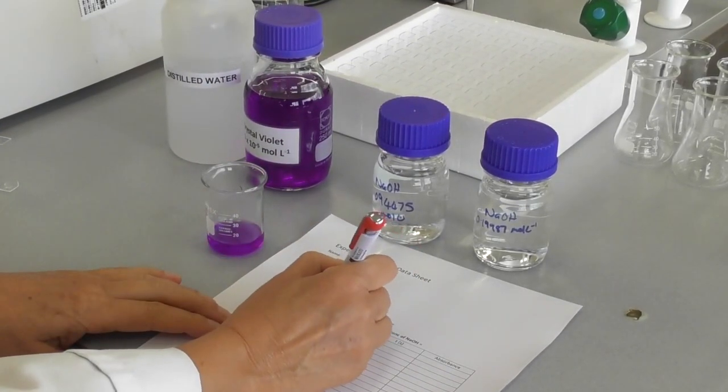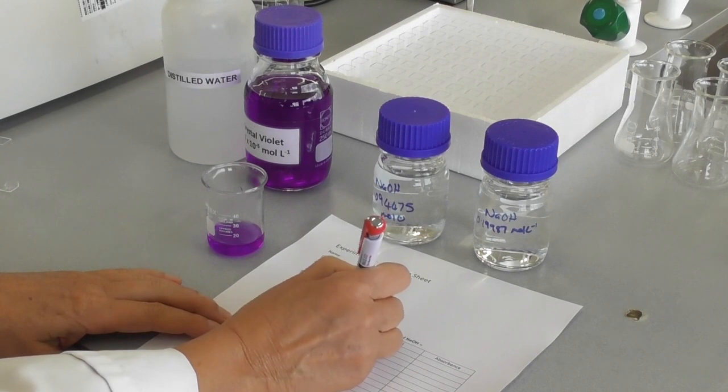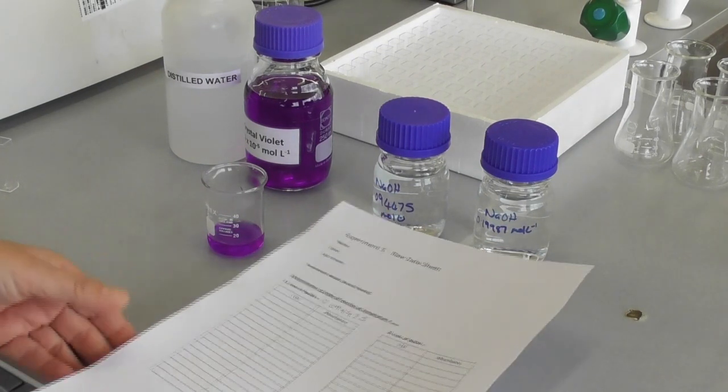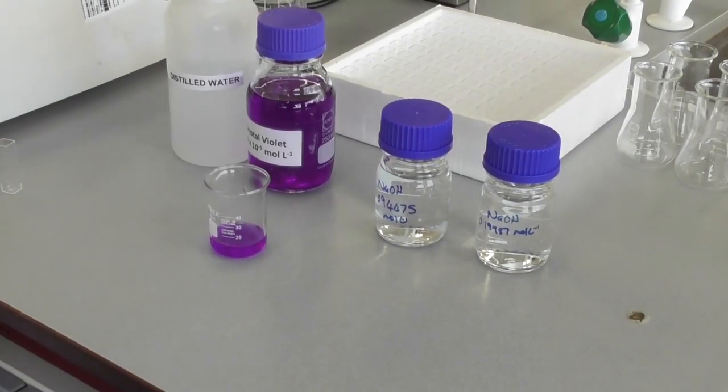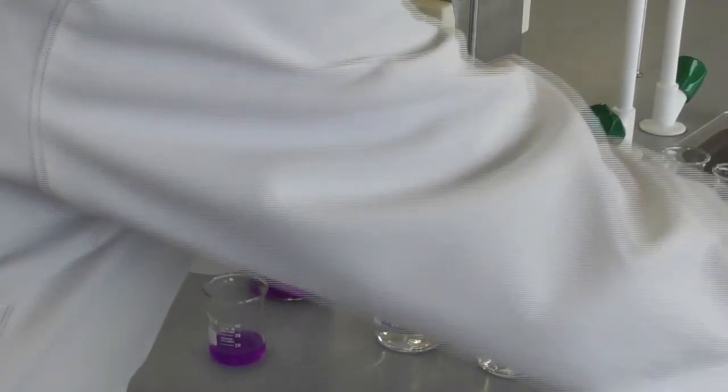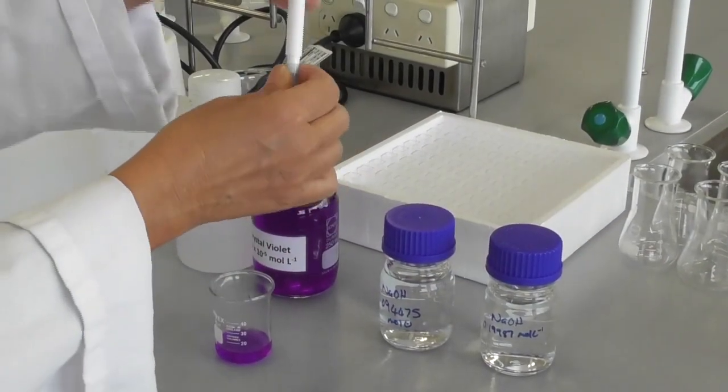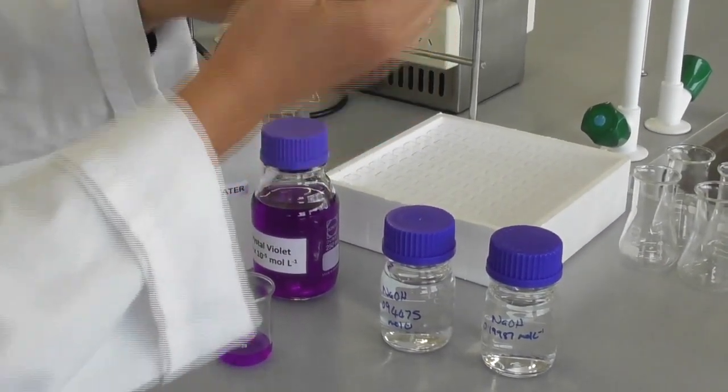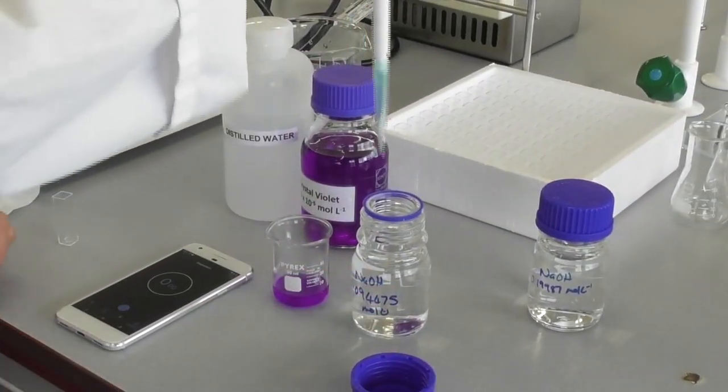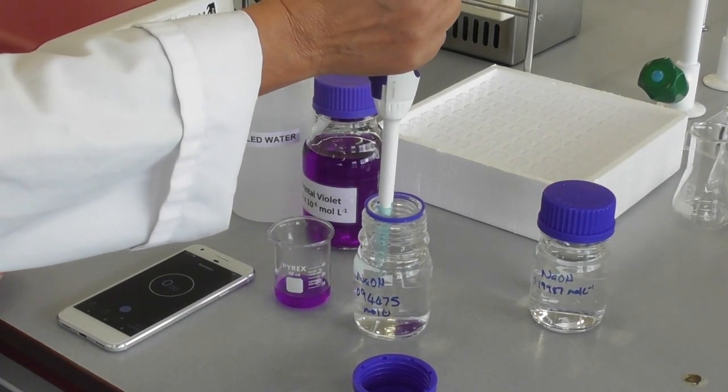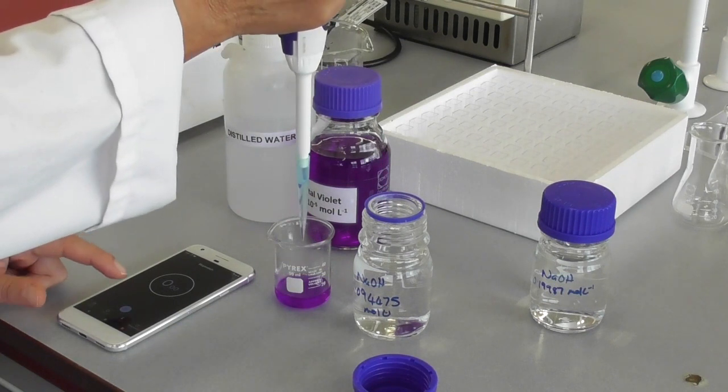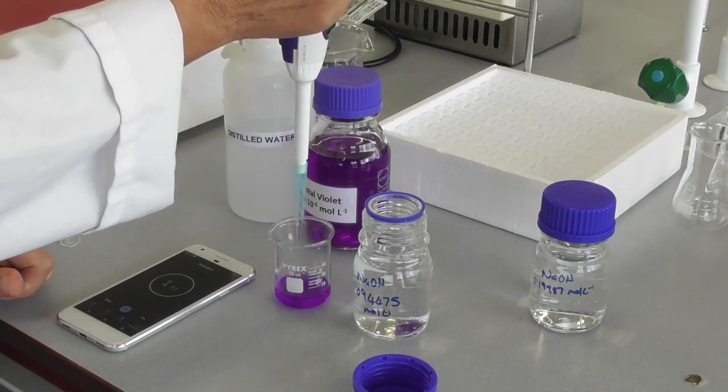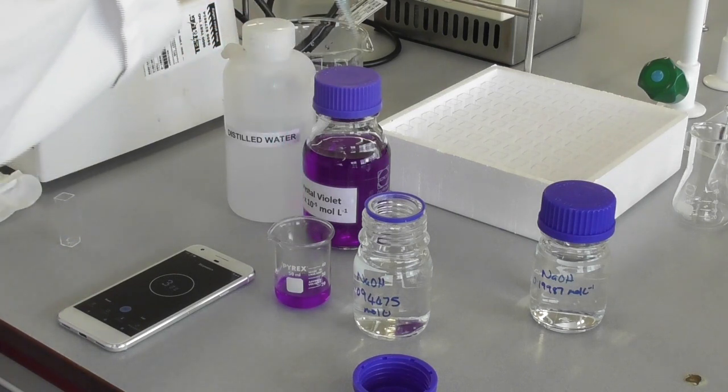Next we write down the exact concentration of our 0.1 molar sodium hydroxide solution, which will be somewhere near 0.1 molar. We grab a smaller micropipette and attach a smaller tip. This pipette is set to 1000 microliters, which is 1 ml. We measure out this ml and dispense it into our crystal violet solution. Halfway through the addition we start the timer.